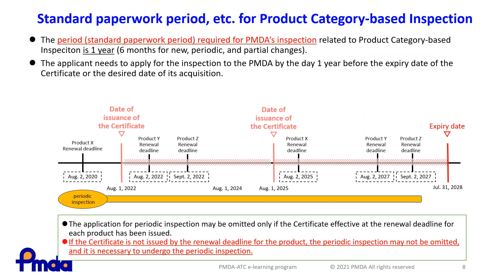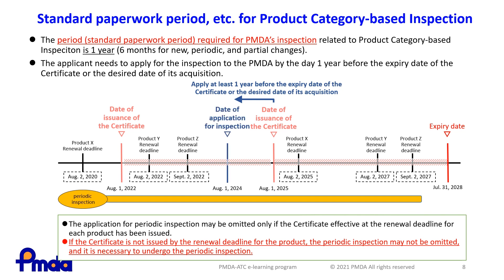In the product category-based inspection, the standard paperwork period required for PMDA's inspections is one year. Thus, the application needs to be made at least one year before the desired date for issuing the certificate. Since the application for periodic inspection may be omitted only if the issued certificate is effective at the renewal deadline for each product, if it is not issued by the renewal deadline for the applicable product, the periodic inspection may not be omitted and the applicable inspection must be carried out.